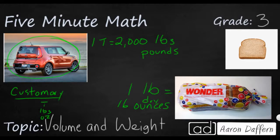And those 16 ounces, well, one ounce is OZ, is about a slice of bread. So it doesn't weigh very much at all. So you've got ounces, pounds, and a ton.